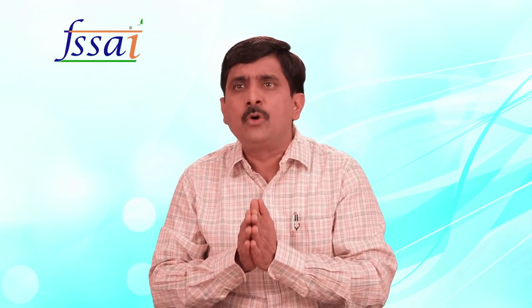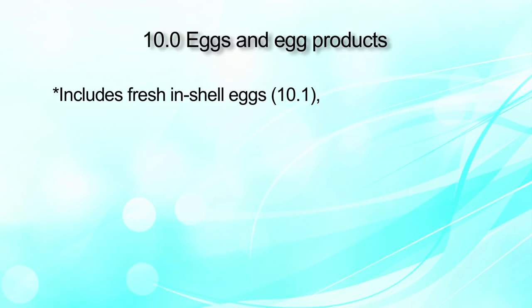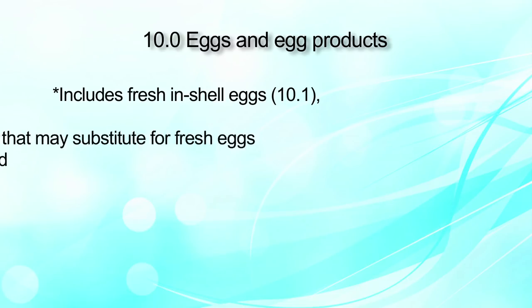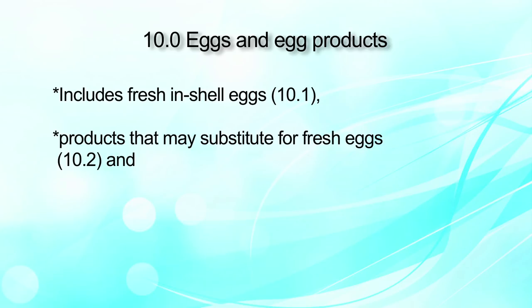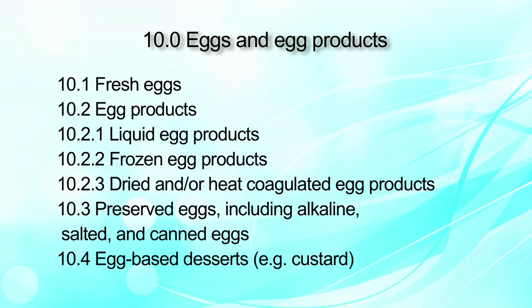Category number 10 is egg and egg products. It includes fresh in-shell eggs (whole egg 10.1), products that may be substituted for fresh eggs (10.2), and other egg products (10.3 and 10.4). Fresh eggs include liquid egg, frozen egg and dried egg. Preserved eggs include alkaline, salted or canned eggs. Egg-based desserts include custards. All egg items are covered in category number 10.